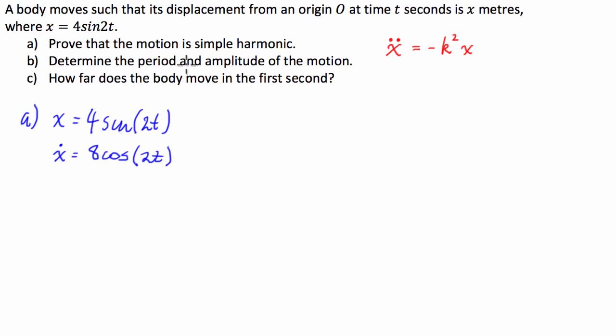And from here, we get the double derivative, or we just take the derivative of this. X double dot is equal to, the derivative of cosine is negative sine, we've got times the derivative of the inside, which is 2. We're going to have negative 16 sine of 2t. Now, this is quite interesting. We have this equation here, but if you notice, these two equations here are linked.